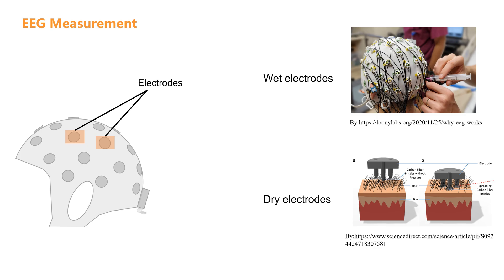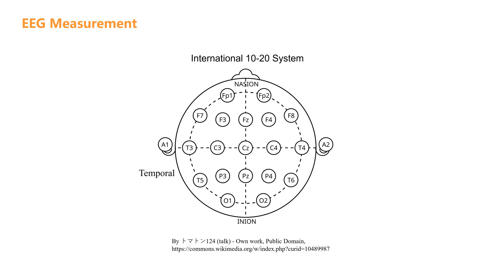However, their signal quality may not be as stable as wet electrodes, especially for long-term recordings where they might fall short. The number and placement of electrodes determine the field of view and the sources of the EEG signals.